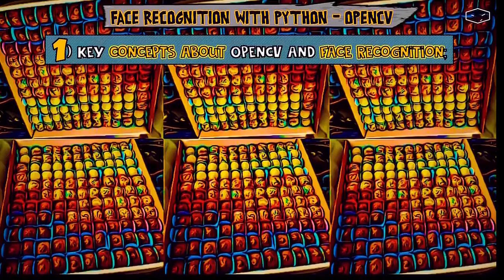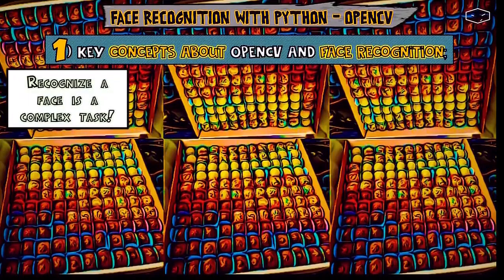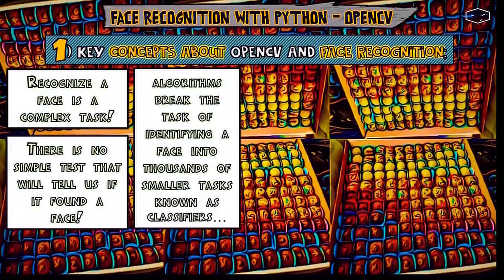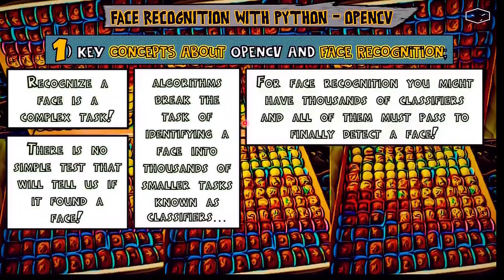About face recognition: recognizing a face is not a simple task, so there is no single simple check that will tell us if a face was found. The algorithms must break the task of identifying a face into thousands of smaller tasks, known as classifiers. For face recognition, you might have thousands of classifiers, and all of them must pass to finally detect a face.